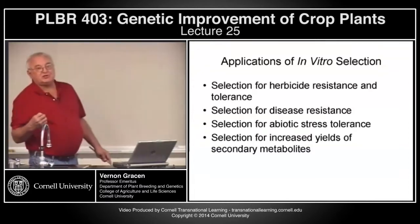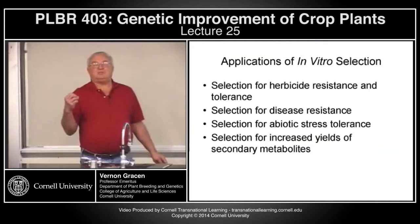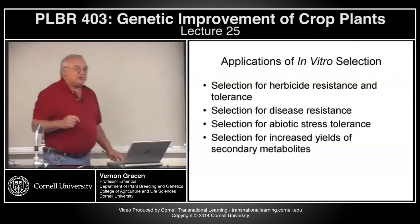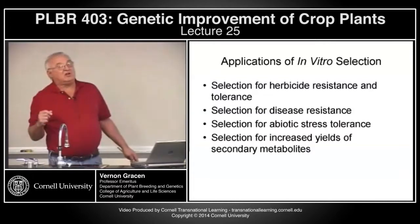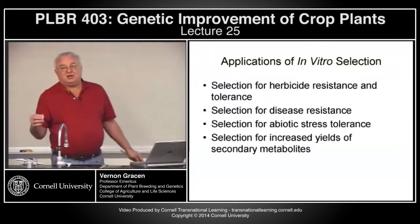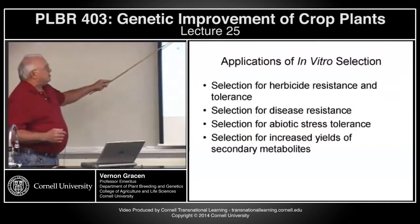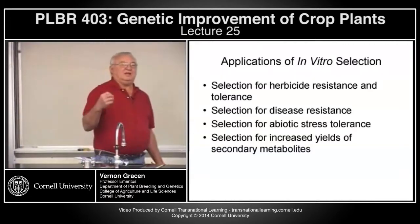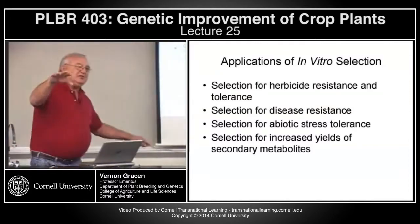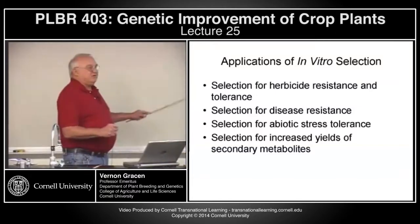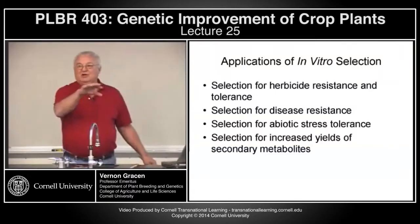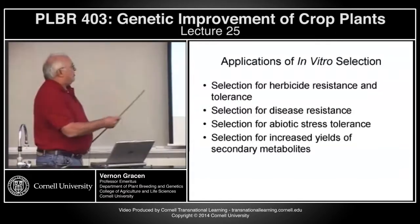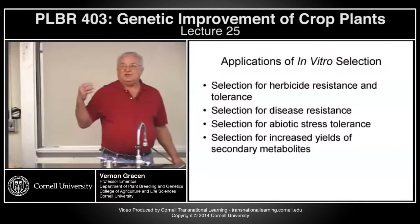You can select for disease resistance. In cases where the pathogen produces a toxin that kills host cells, you can select for disease-resistant variants. Work was done selecting for southern corn leaf blight resistance, because the pathogen that causes that disease produces a toxin responsible for killing the cells. For abiotic stress tolerance, it's difficult to change culture conditions to get the stresses, but if you can put in materials that create high osmoticum or salt stress within your media, you can select for materials tolerant to salts. You can certainly select for materials tolerant to heavy metal ions.